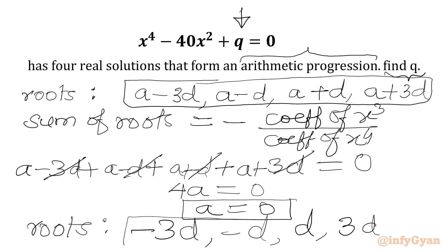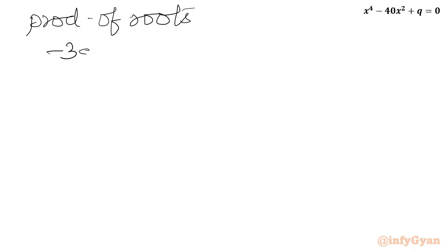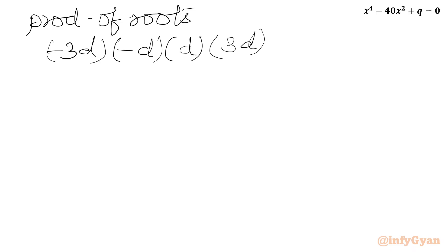Now we will use the product of roots formula via Vieta's method. The product of all four roots equals the constant term over the coefficient of x⁴. So: (−3d)(−d)(d)(3d) = q. Minus times minus gives plus, so we get 9d⁴ = q. This is equation 1.